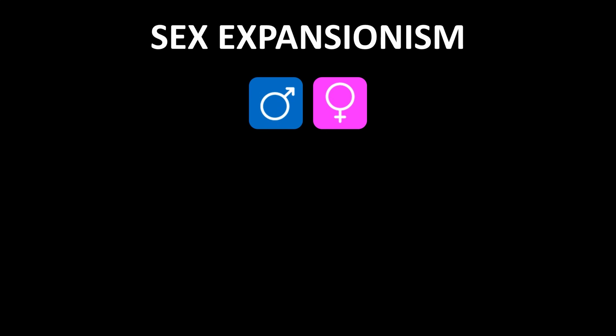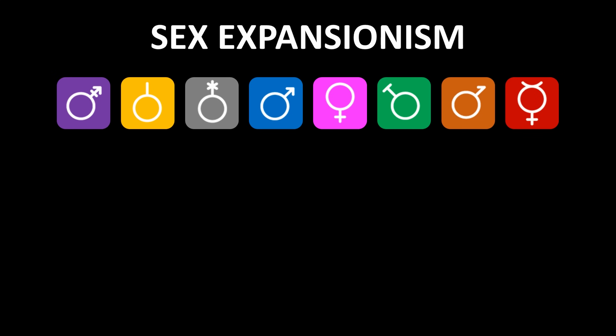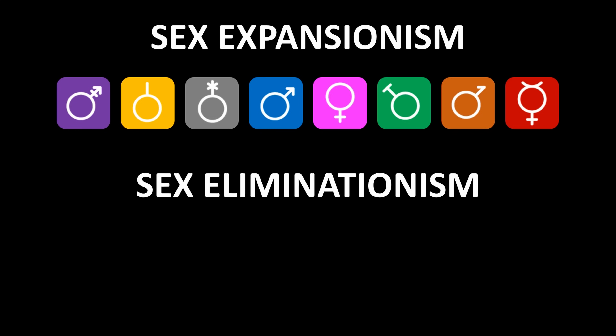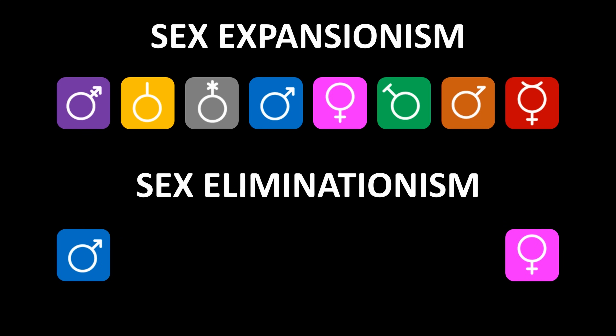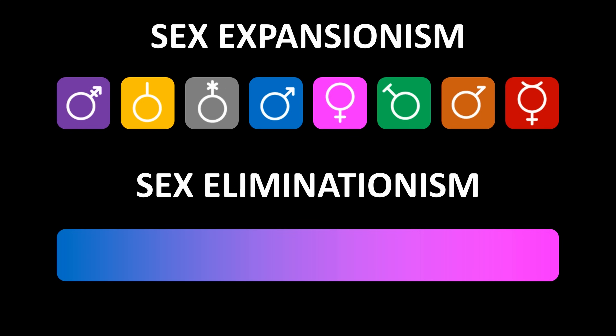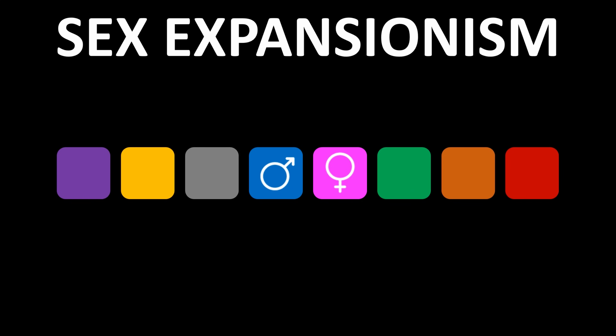The arguments against the sex binary come in two main categories. The first I call sex expansionism — the idea that there are more than two sexes, maybe four, six, or eight. The second I call sex eliminationist arguments — the idea that sex exists on a spectrum where you can only statistically approximate sexes, that males and females are statistical realities, that you can have degrees of maleness and femaleness but cannot definitively be male or female, and that sex is a mutable thing.